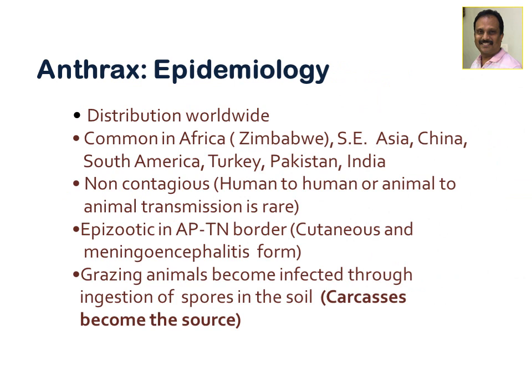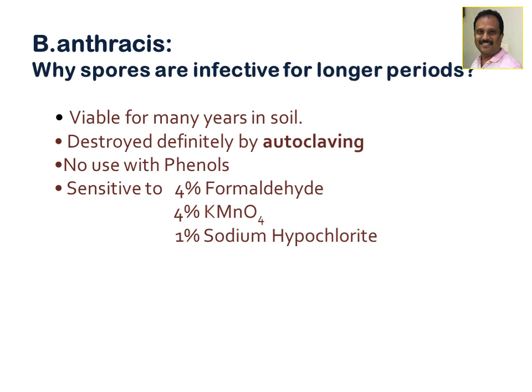Anthrax has worldwide epidemiological distribution and is common in Africa, Zimbabwe, Southeast Asian countries, China, South America, Turkey, Pakistan, and India. It is a non-contagious disease — human-to-human and animal-to-animal transmission is rare. Episodic transmission occurs in Andhra and Tamil Nadu border regions. The disease presents in cutaneous and meningoencephalitis forms. Grazing animals become infected through ingestion of spores in the soil or from carcasses.